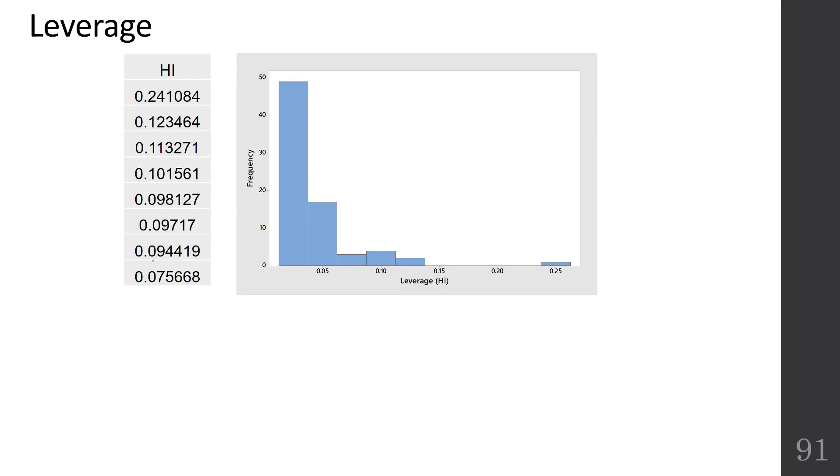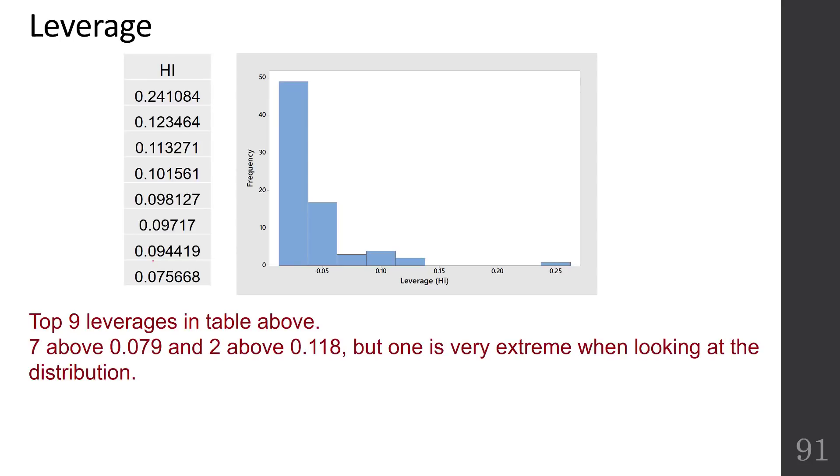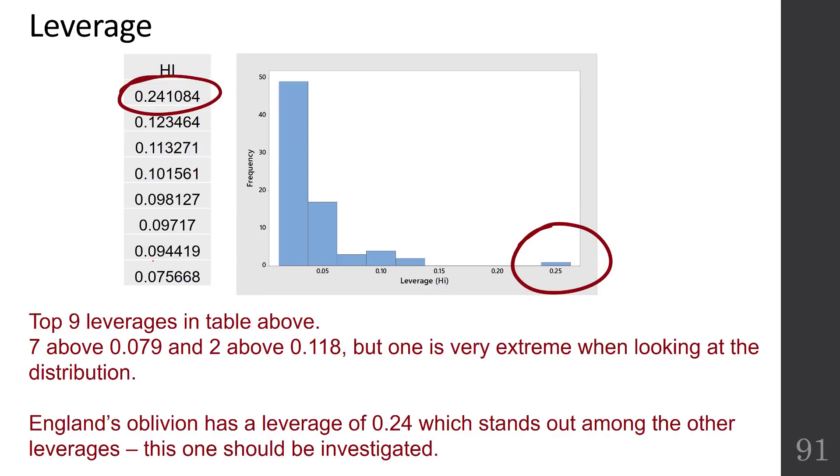We've got output of all the actual leverages, not just a plot of them. I've created a table with just the top nine leverages and a histogram of all the leverages. There are seven leverages above 0.079 and two above 0.118, but one of them is very extreme when looking at the distribution. That was that one we saw on the plot on the previous slide. This happens to be England's Oblivion and it has a leverage of 0.24 which stands out among the other leverages, so this one needs to be investigated.